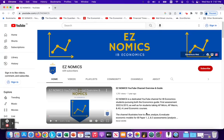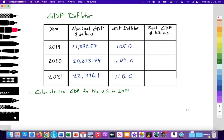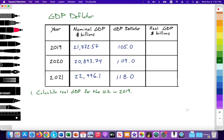Hello, this is Domenico with EasyNomics, and today we're going to do some Paper 3 — or it can show up on Paper 2 — type calculations. We're going to look at the GDP deflator. This is a good opportunity to practice on your own and test your knowledge of this equation. I will be asking you to pause the video to make a few calculations, so let's go ahead and do this.